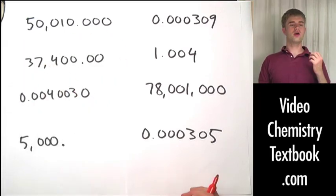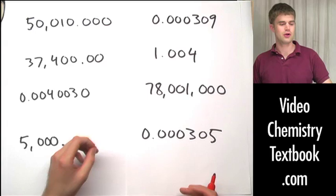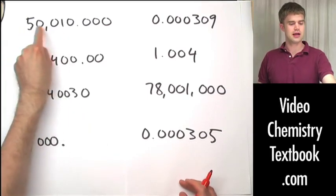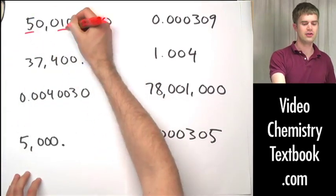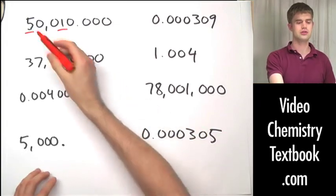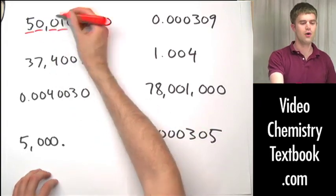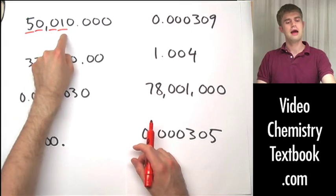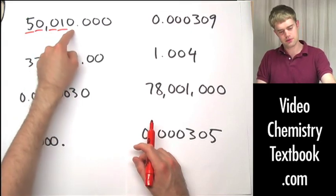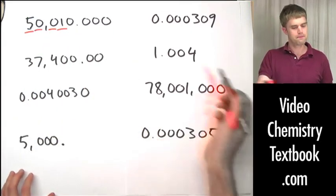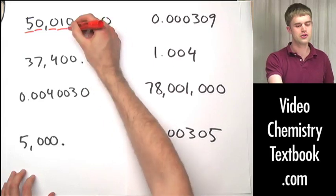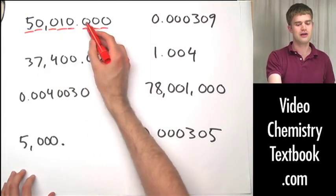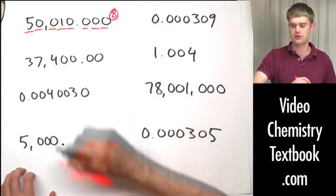Let's look at this next number. There are a couple of rules to consider. First, there are zeros sandwiched between the 5 and the 1 — both non-zero digits are always significant, so the sandwiched zeros are significant too. Now, do the zeros that come to the right count? Well, there's a decimal point in the number, which means they are significant. That gives us 8 total significant figures.